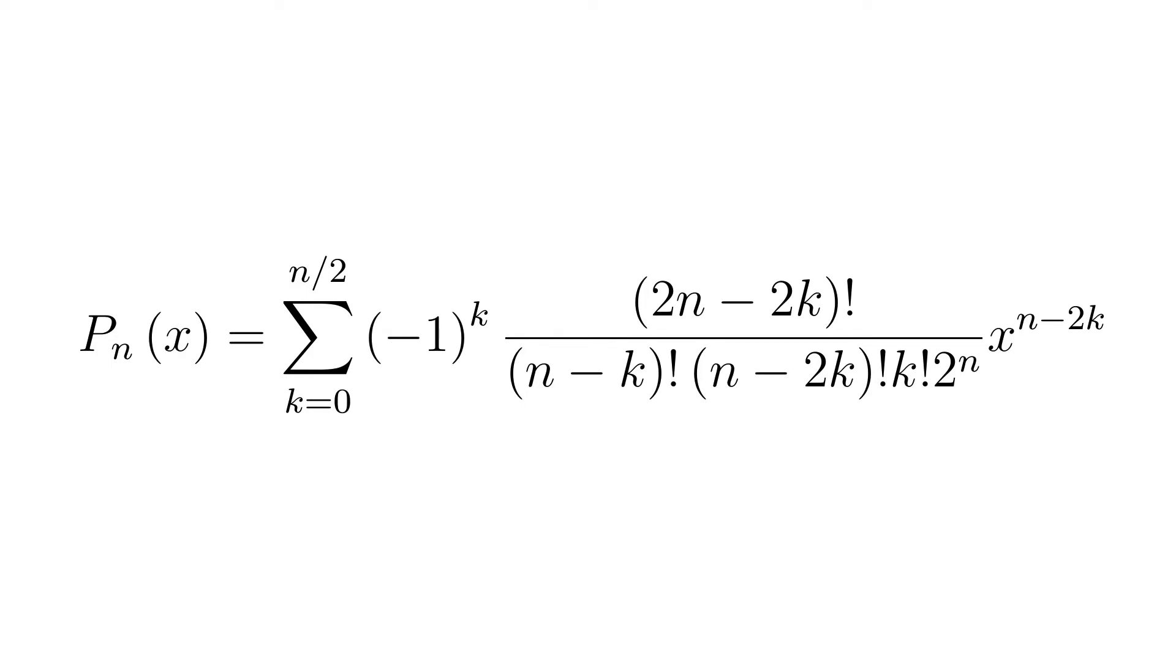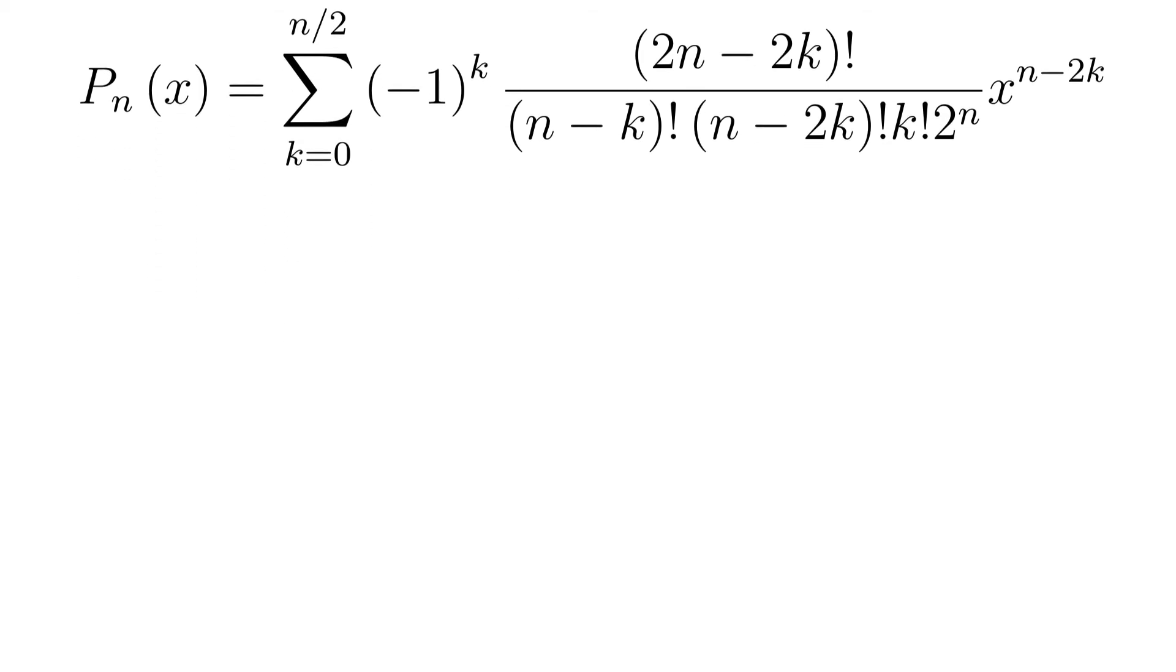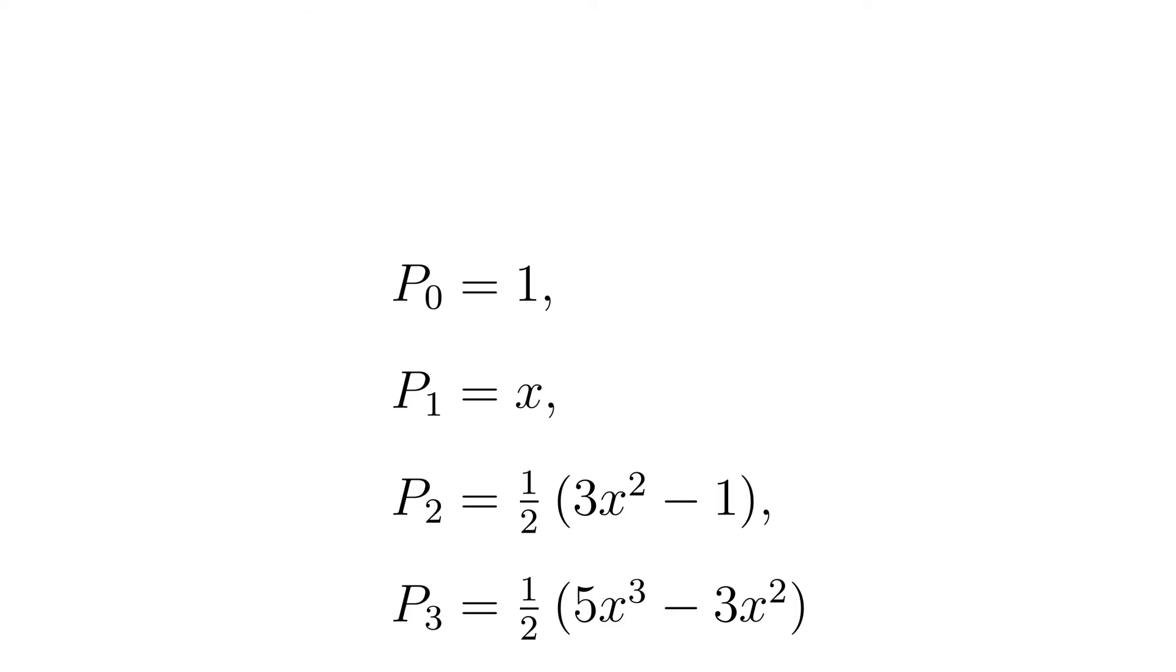The first terms of the Legendre polynomials are p0 equals 1, p1 equals x, p2 equals 1 half times 3x squared minus 1, p3 equals 1 half times 5x to the power of 3 minus 3x and are shown in this figure.